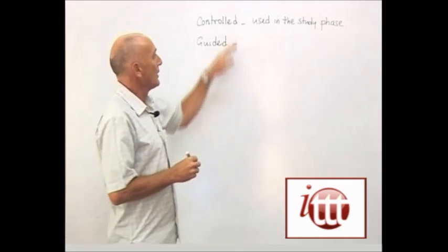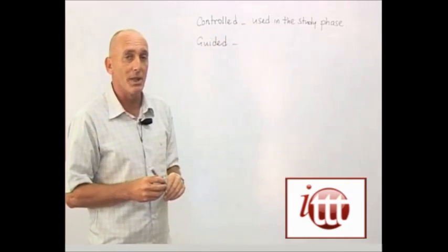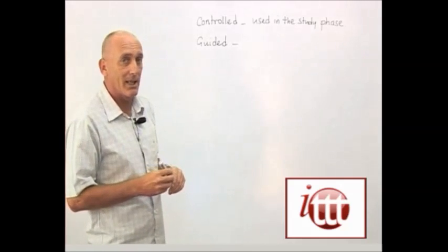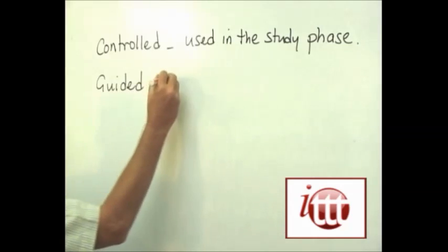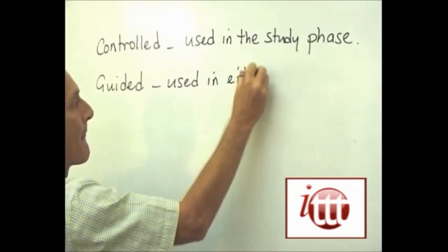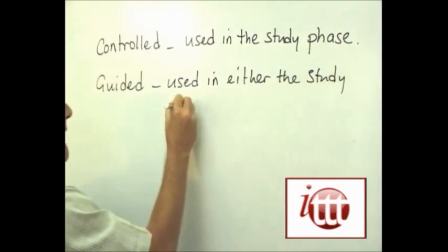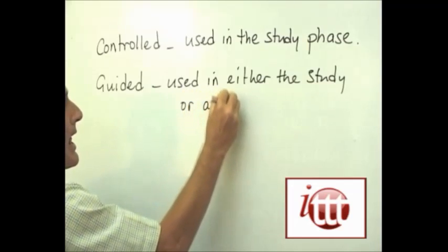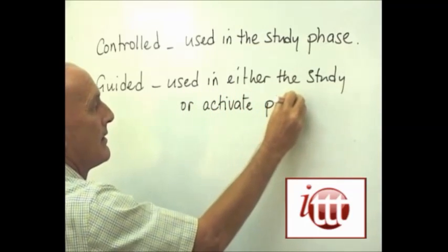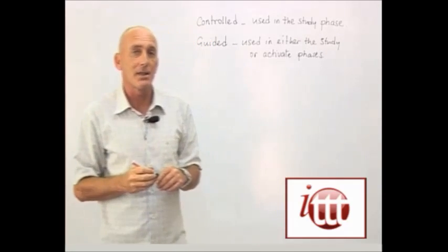In a controlled activity, there is control over what they say and how they go about saying it, so there's a high level of structure. A guided activity has slightly less structure than this, and it can be used in either the study or the activate stages themselves.